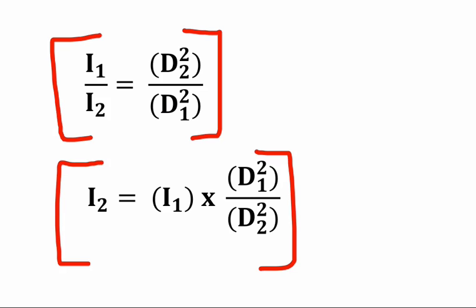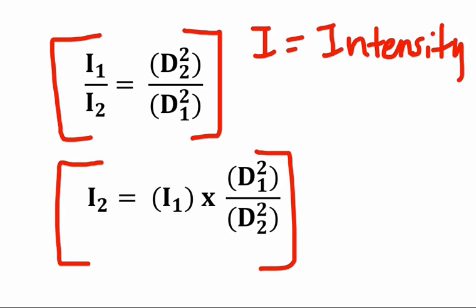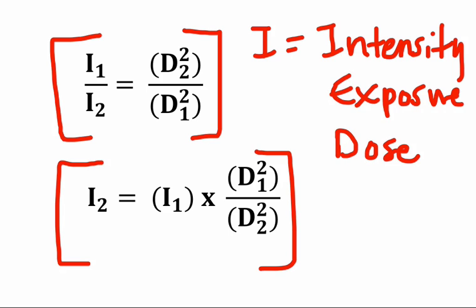And that's another point that I wanted to make right away, is that the inverse square law is often used in the case where I is equal to intensity, but the inverse square law is practical for other reasons as well. I can be equal to exposure. I can be equal to dose. And you can even use I as being equal to Kerma.